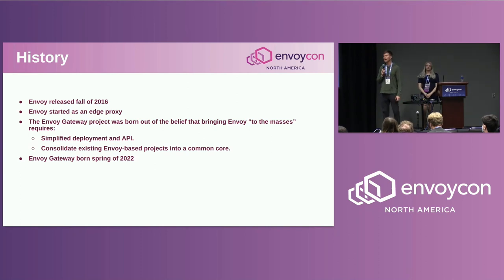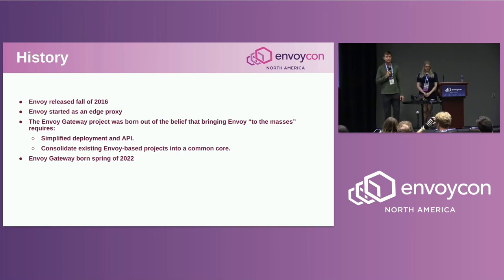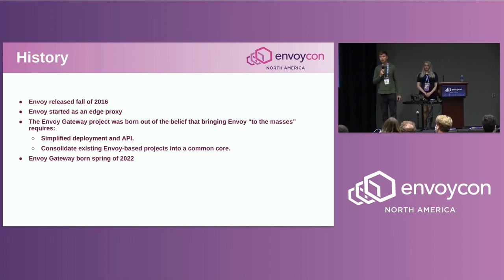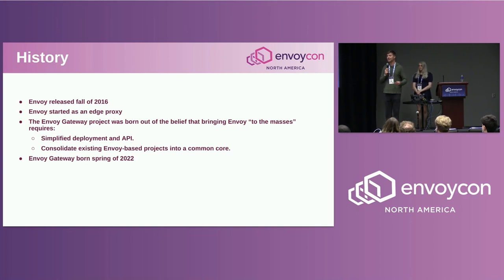This is an Envoy Gateway project update. Six months ago we released the project publicly at KubeCon EU and received a lot of positive feedback. When we released the project, it was really nothing but a design spec and a public announcement that we were forming the project — that was Tetrate, Ambassador Labs, as well as VMware that came together to announce it. Thanks to Matt Klein for shepherding the group together. We've accomplished quite a bit in the last six months that we'll cover today.